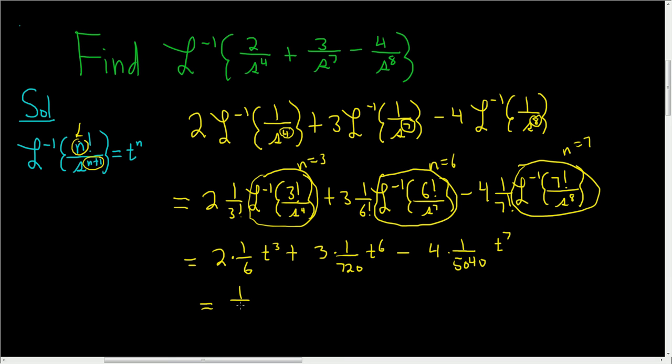So this is equal to 1 third t cubed. And 3 over 720 simplified, using the power of a calculator, is 1 over 240, which you could do by hand, but why take a chance? And then minus, we have to deal with this 4 over 5,040. So 4 over 5,040 is, well, my calculator is not working. So I guess we'll grind it out. 5,040 divided by 4 is 1260. So this is 1 over 1260. Who made up these numbers? I guess I did. And that's the final answer.